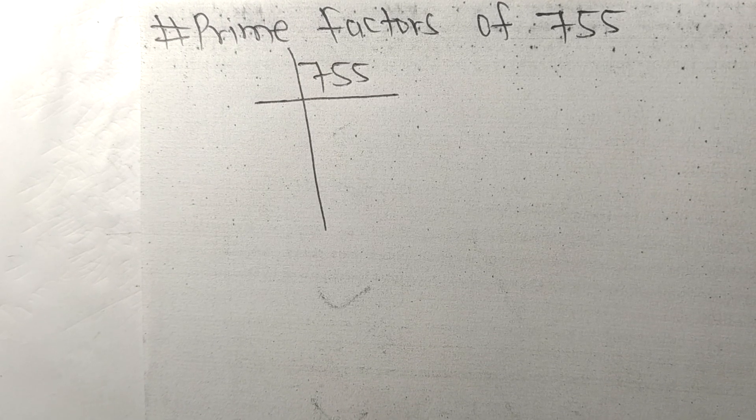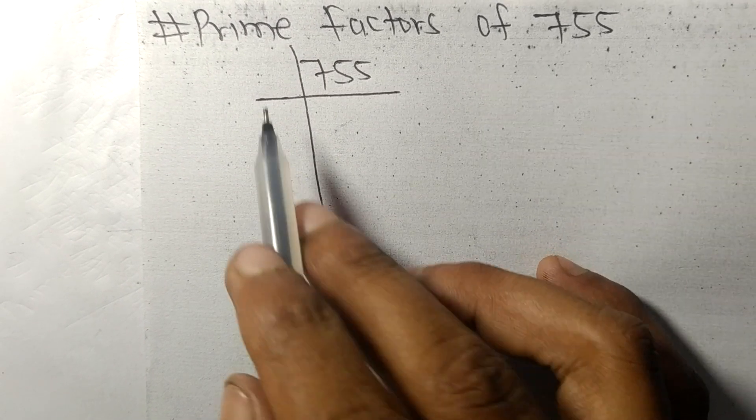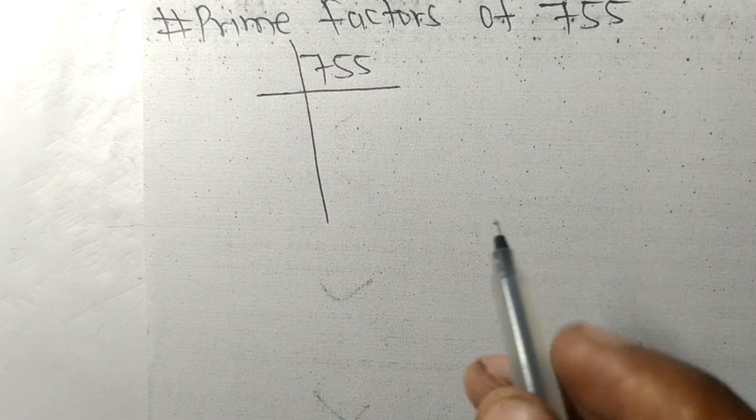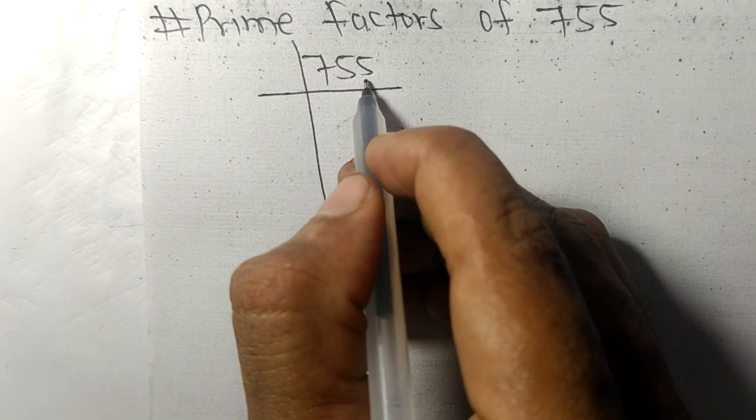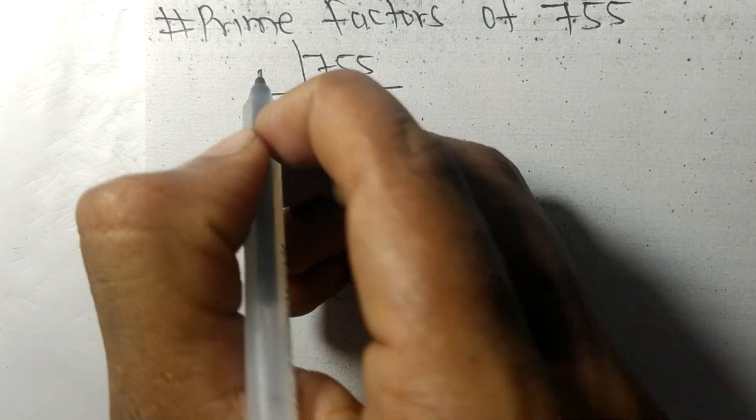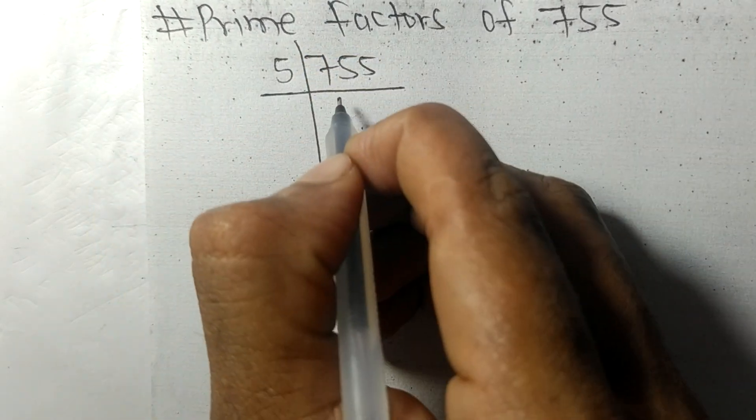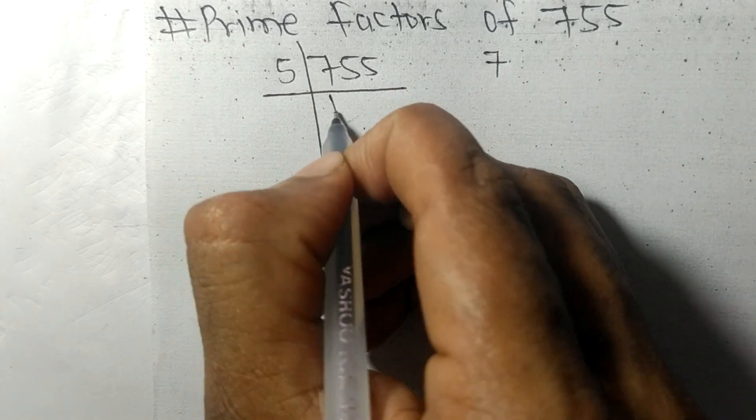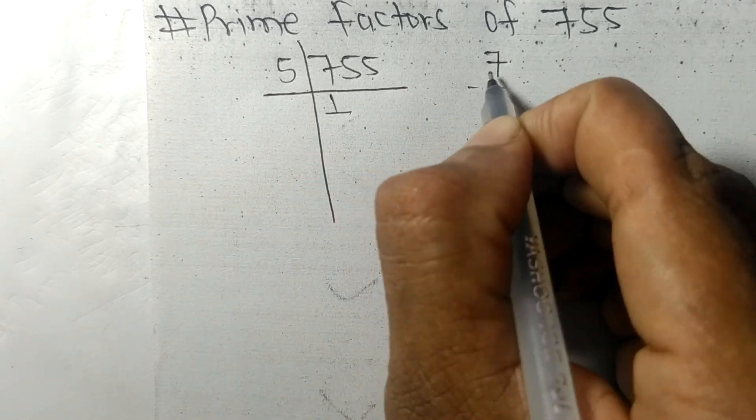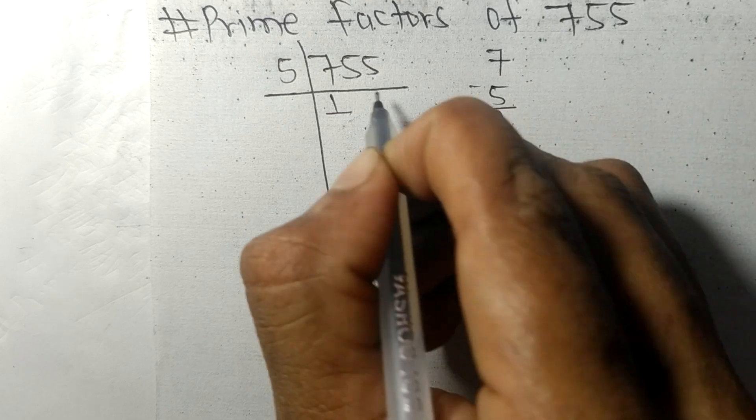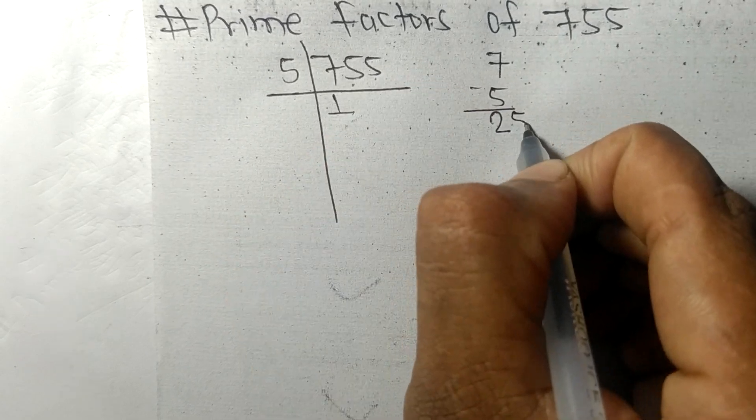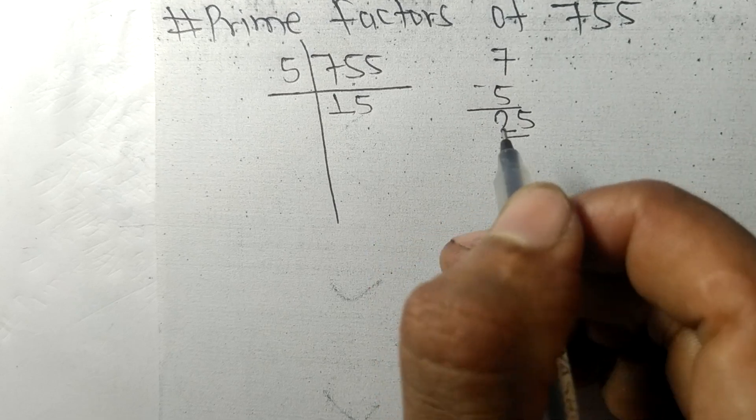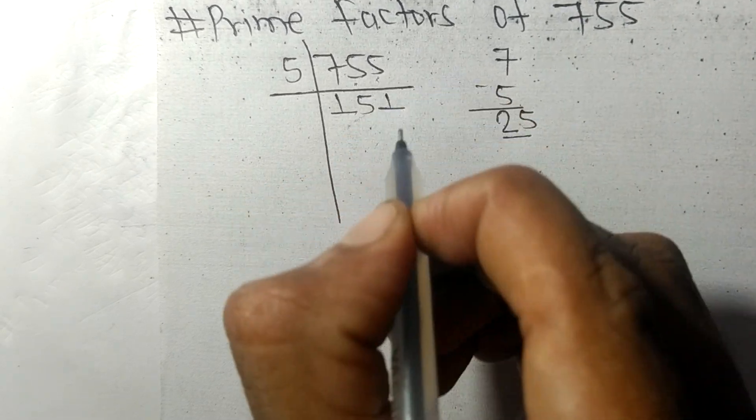Today in this video we shall learn to find the prime factors of 755. It contains 5 at the last, so it is divisible by 5. Here we got 7, so 5 times 1 is 5, and subtracting we got 2. This 5, 25, so 5 times 5 is 25 and 5 times 1 is 5.